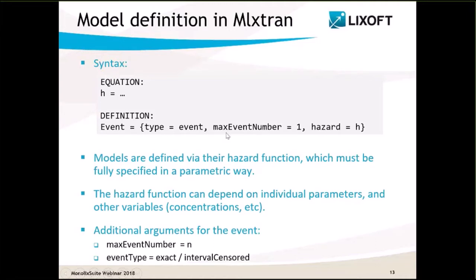There are additional optional arguments that allow defining the type of event. For one-off events, the maximum number of events per individual is one, and it is important to indicate it in the max_event_number argument to speed up calculations. When events are not exactly observed but interval-censored, it must be specified with event_type. The key step to define a TTE model is to define the hazard.